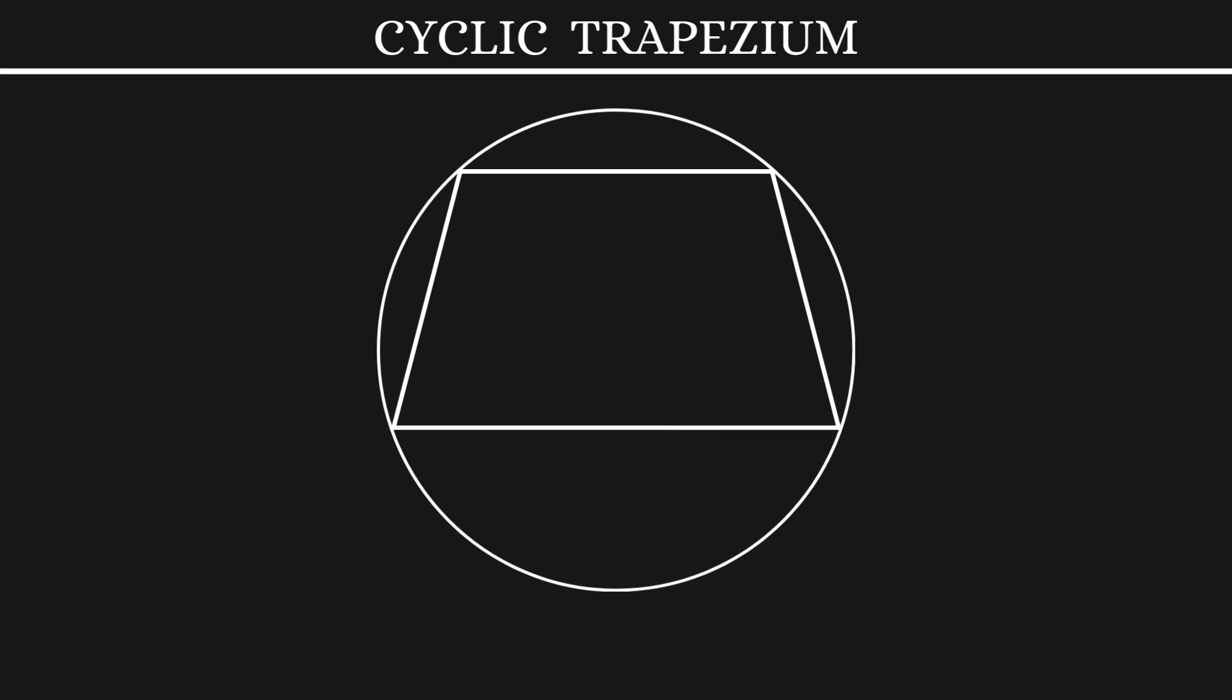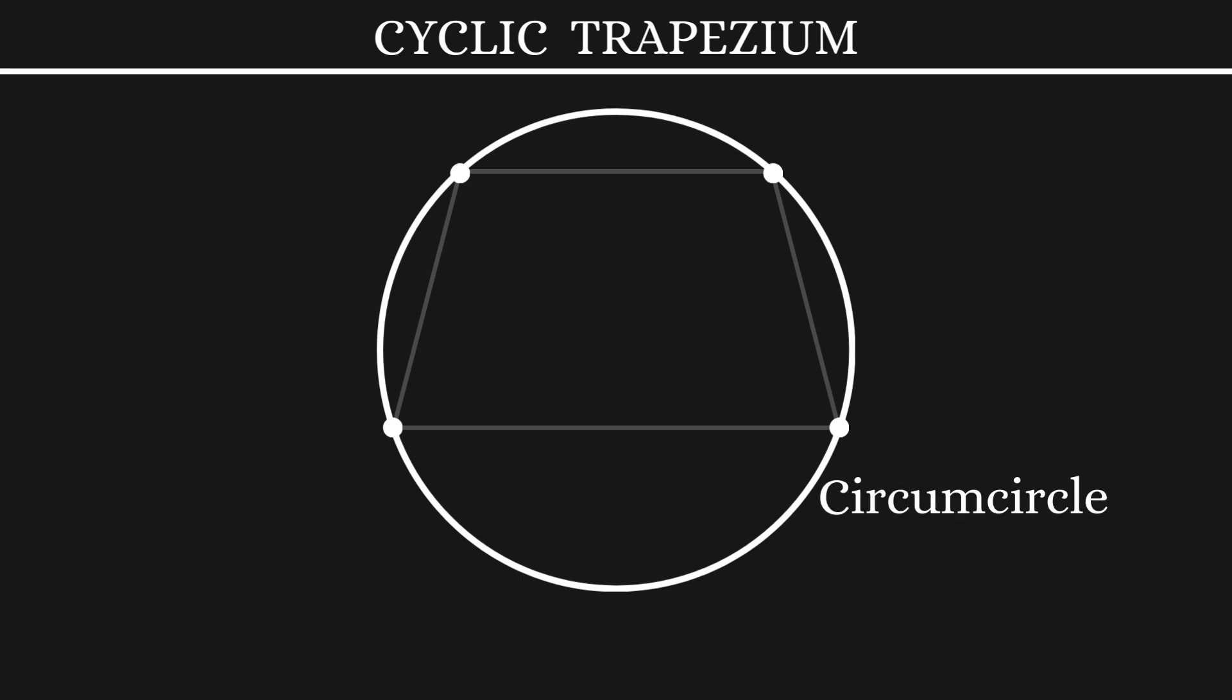This means that the four vertices of this trapezium will lie on a common circle. This circle can be called the circumcircle and its center becomes the circumcenter. Also, you can consider each of the sides of this trapezium as chords of the circumcircle.